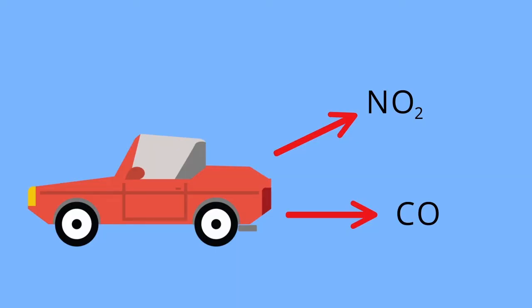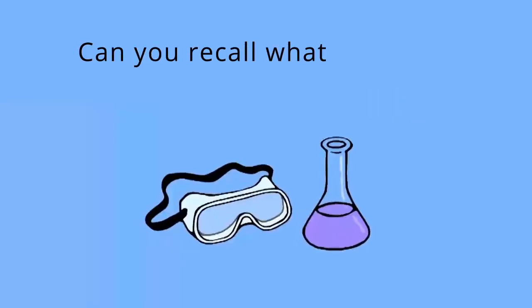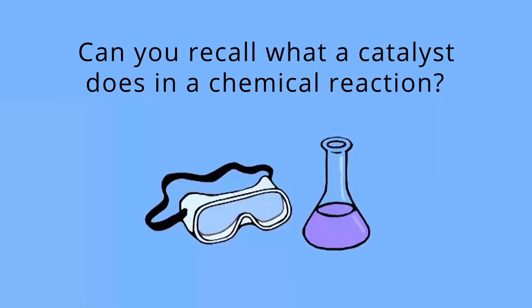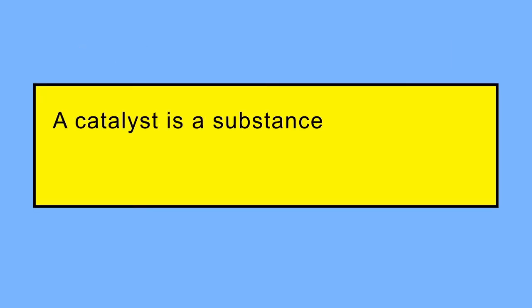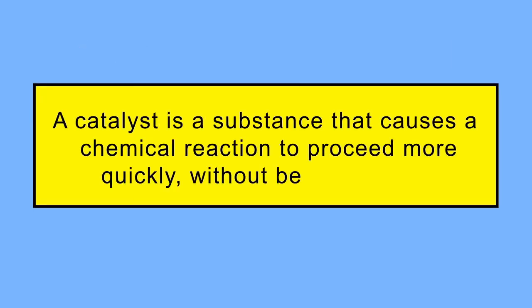Instead of releasing these products, the catalytic converter will release harmless gases into the atmosphere. Can you recall what a catalyst does in a chemical reaction? A catalyst is a substance that causes a chemical reaction to proceed more quickly without being used up.